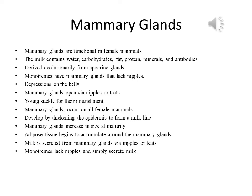The next gland is the mammary gland. Mammary glands are functional in female mammals and present but non-functional in males. The milk that mammary glands secrete contains water, carbohydrates — especially the sugar lactose — fat, protein, minerals and antibodies. Mammary glands are probably derived evolutionarily from apocrine glands and usually contain substantial fatty deposits.